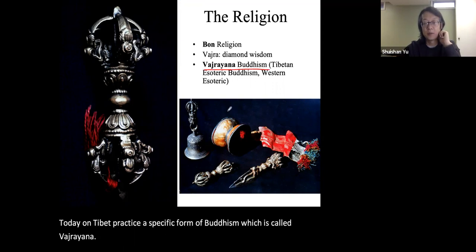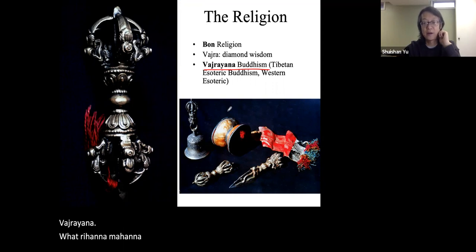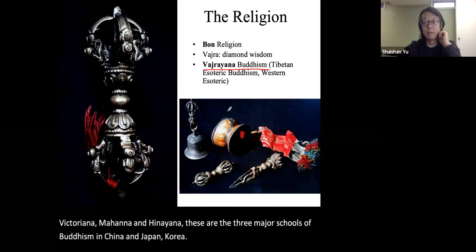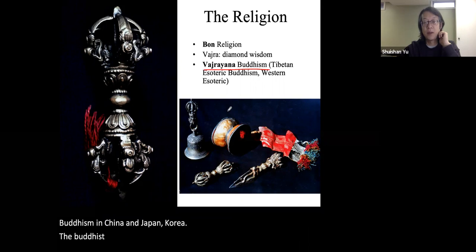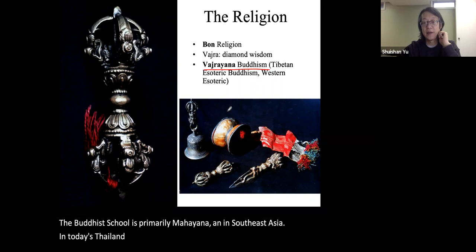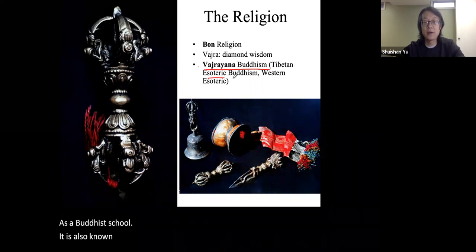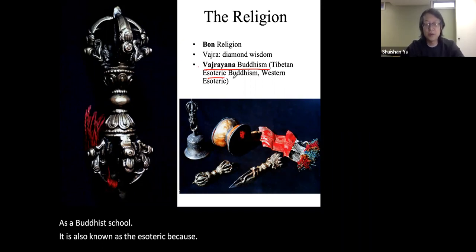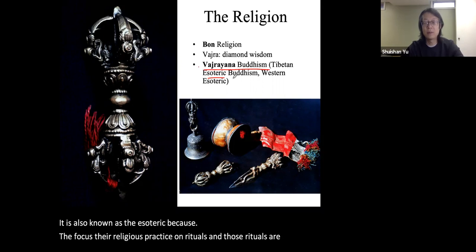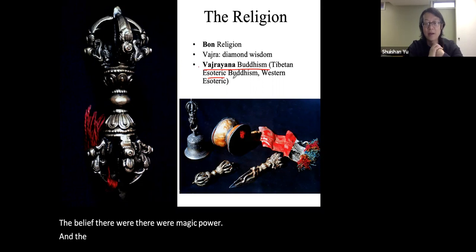Vajrayana, Mahayana, and Hinayana are the three major schools of Buddhism. In China, Japan, and Korea, the school is primarily Mahayana. In Southeast Asia — Thailand, Burma — Hinayana or Theravada is practiced. In Tibet and Mongolia, it is Vajrayana. Vajrayana is also known as the esoteric school, focusing religious practice on rituals believed to have magical power, relying on the direct help of Buddhist deities for enlightenment.